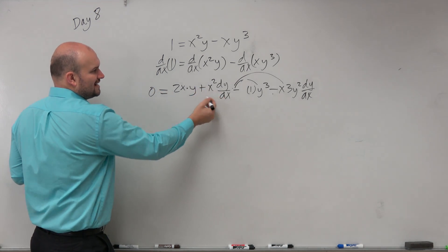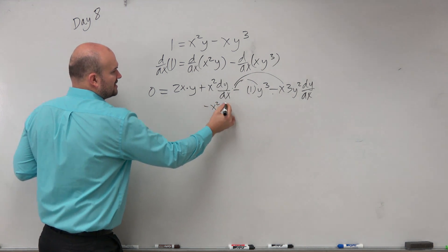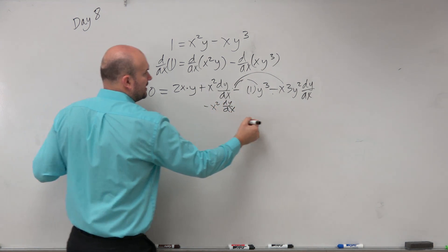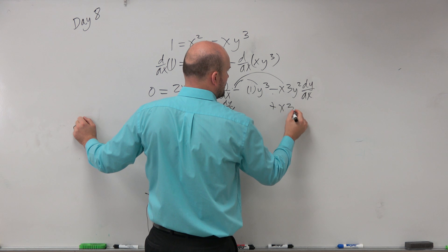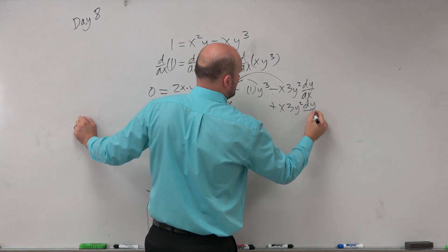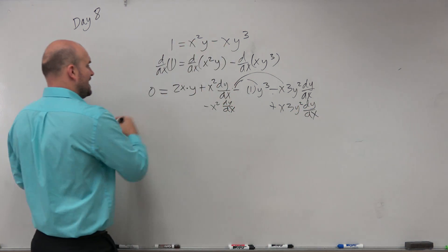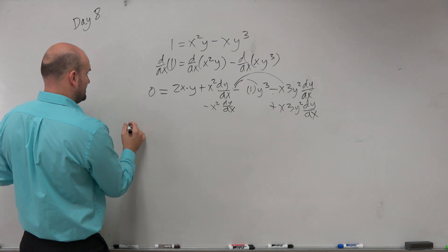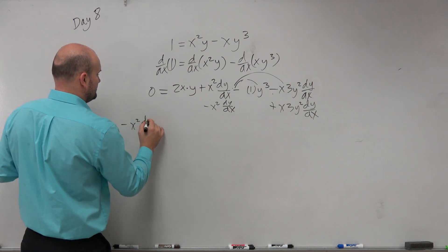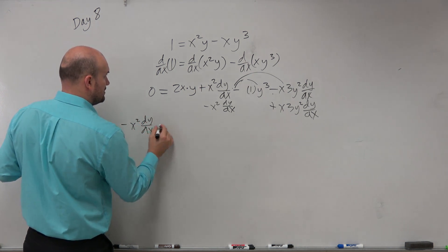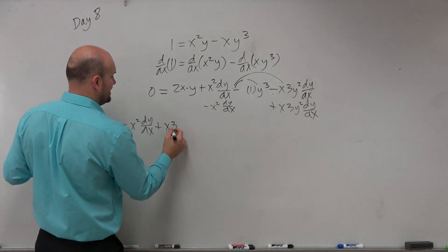So if I subtract this term, x² dy/dx, and if I add this term over here, I am going to obtain -x² dy/dx plus x times 3.